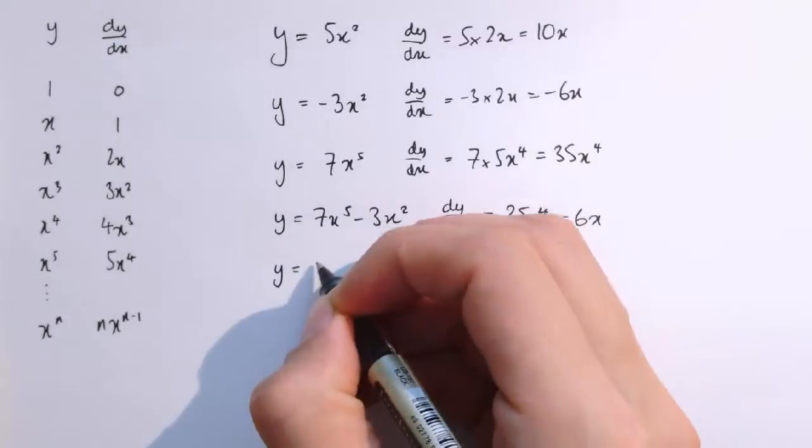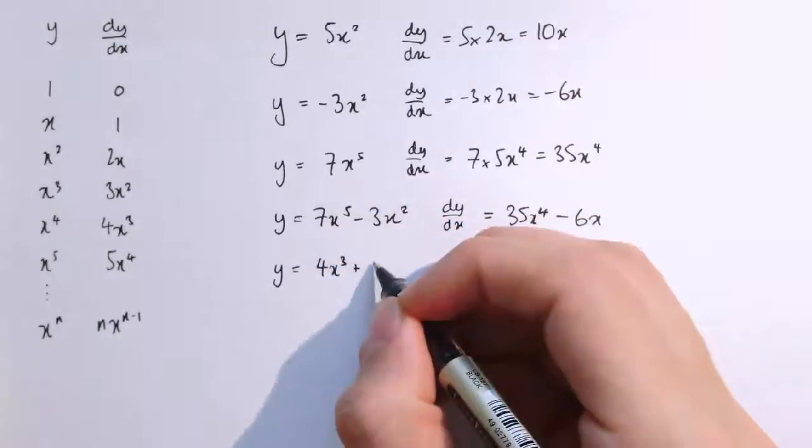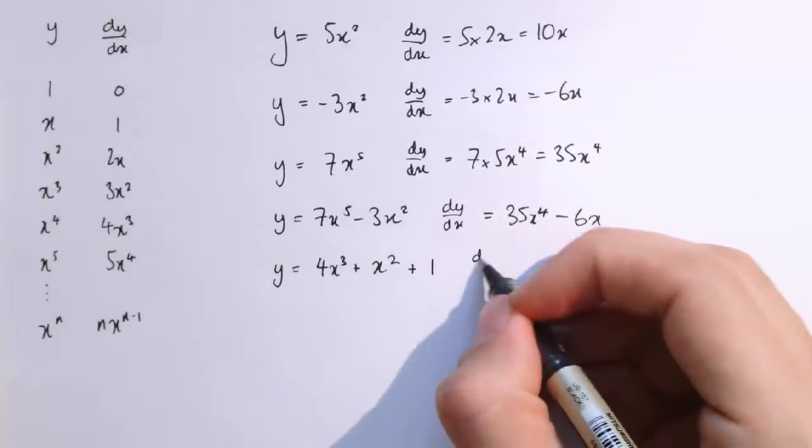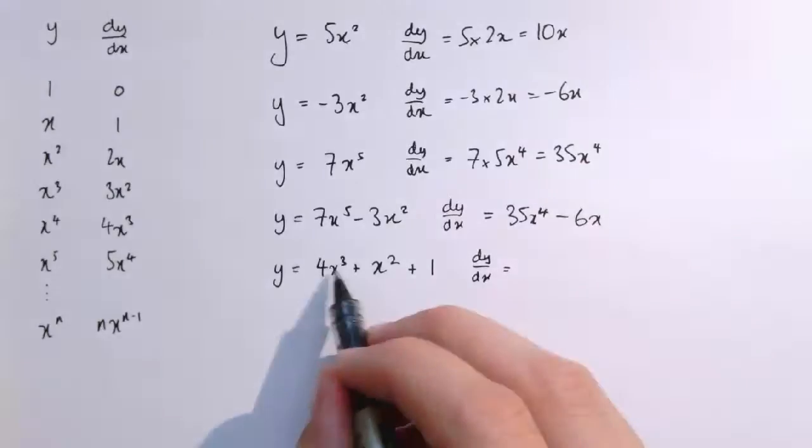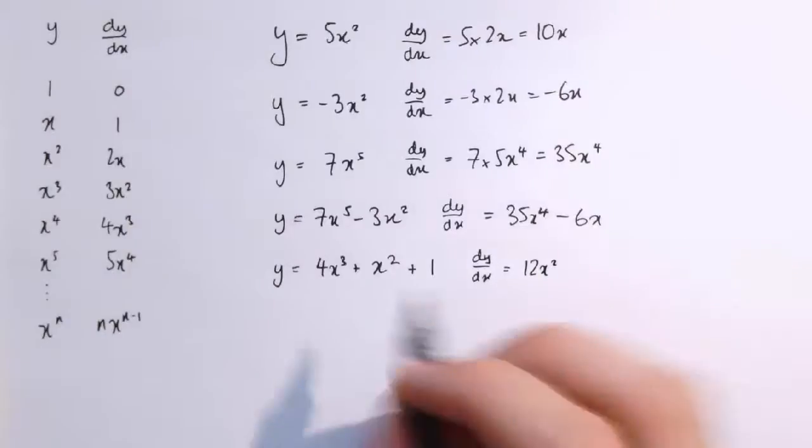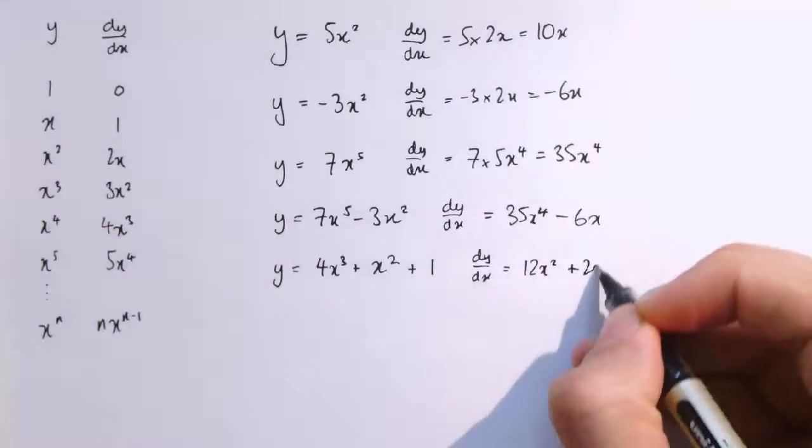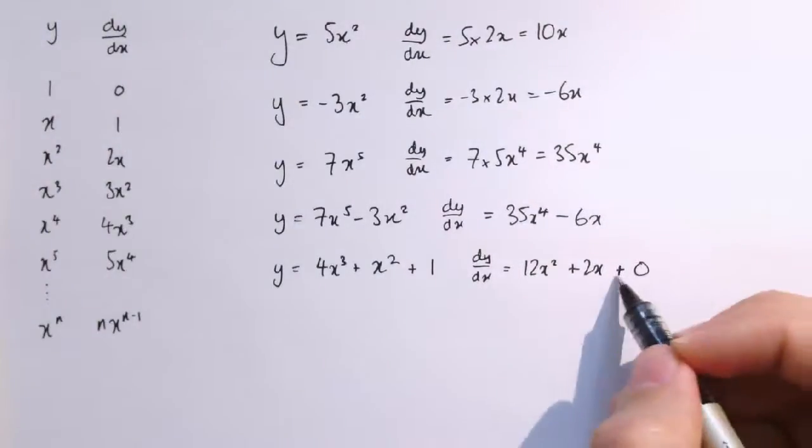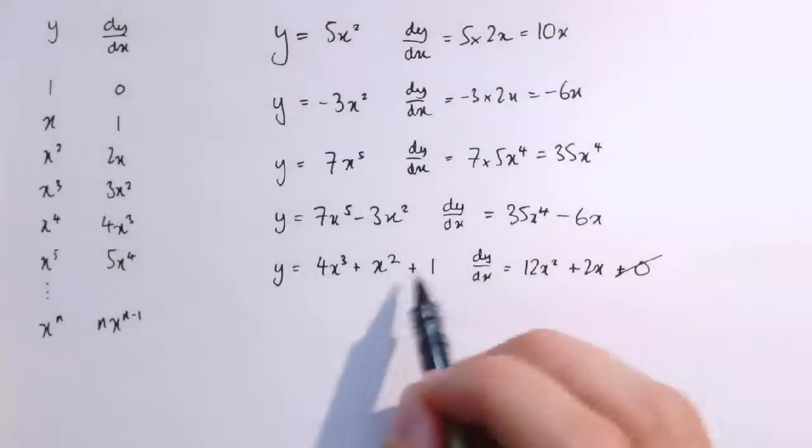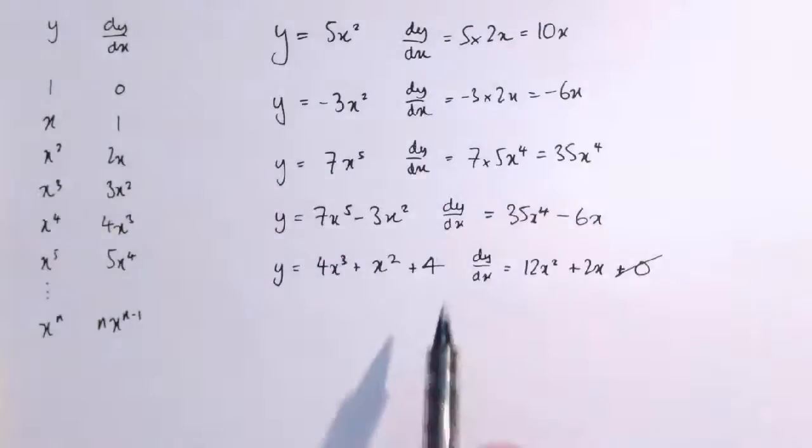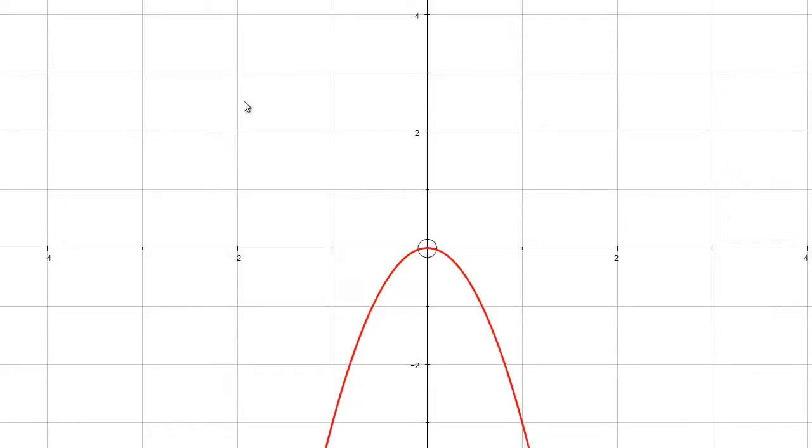So if I did y equals 4x cubed plus x squared plus 1, well, dy/dx, if I differentiate 4x cubed, that's 4 times 3x squared, which is 12x squared, differentiating x squared gives 2x, and differentiating 1 gives 0, so I don't really need to write the plus 0. In fact, whatever number we had here, it could have been plus 4, and then I just got 4 times the derivative of 1, which is 0.